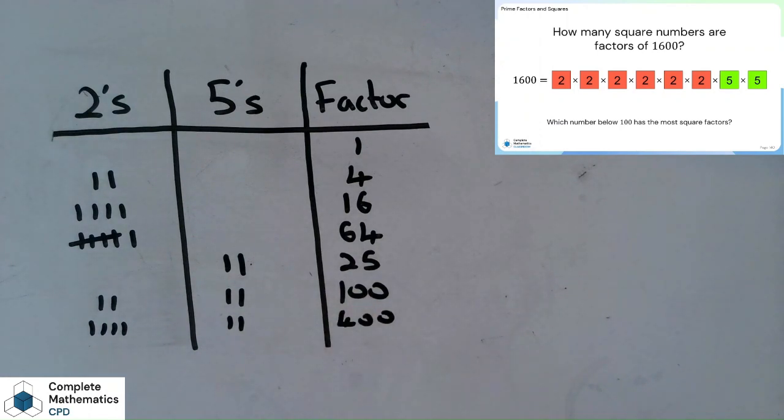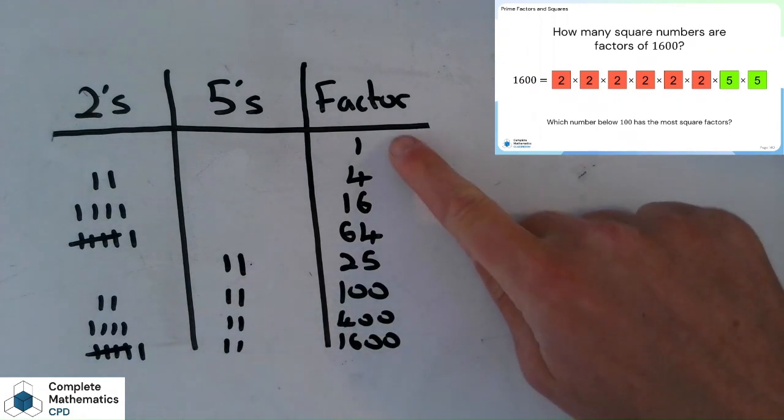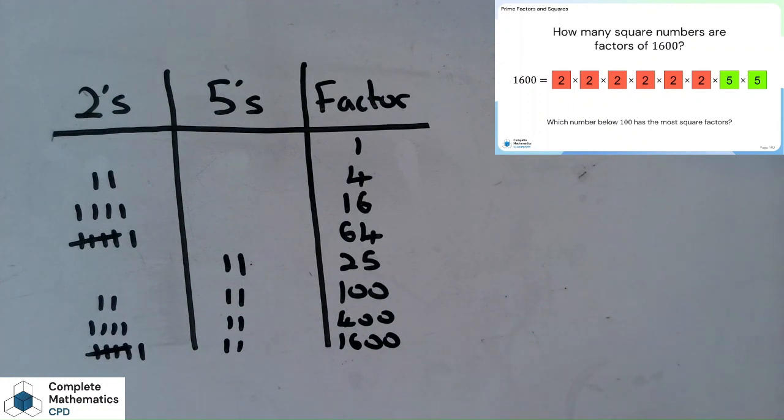And then finally the largest square factor is where I use all of them. So it's going to be both 5s and then 1, 2, 3, 4, 5, 6 2s, which is the number itself, all prime factors used, which is 1,600. So this is an exhaustive list of all the square factors of 1,600.